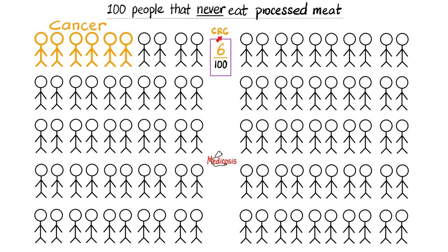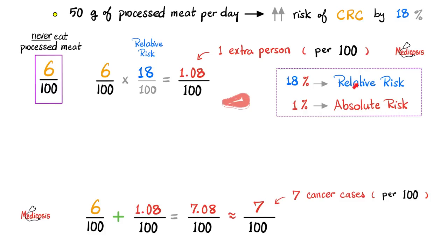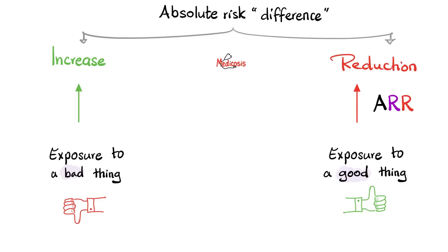So we started with 6 out of 100, add 18% and you end up with 7 in 100, because the 18% is a relative risk increase. The 18% is called relative risk, but the 1% is absolute risk. The absolute risk difference could be an absolute risk increase or an absolute risk decrease. If being exposed to a bad thing — cigarette smoking, asbestos, lead poisoning, arsenic — the absolute risk will be increasing. But if exposed to a good thing — seatbelts, prophylactic therapy, vaccines — we expect absolute risk reduction.